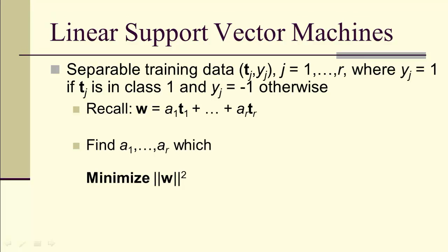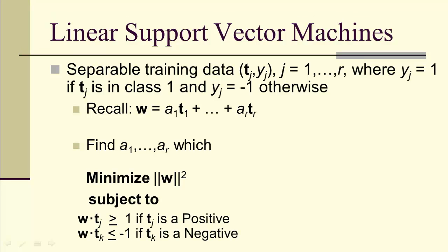We're trying to minimize the size of w here, the parameter, and notice that means finding a_1 through a_r that do this. Notice where these two conditions hold: w dot t_j is greater than or equal to 1 if t_j is a positive, w dot t_k is less than or equal to negative 1 if t_k is a negative.